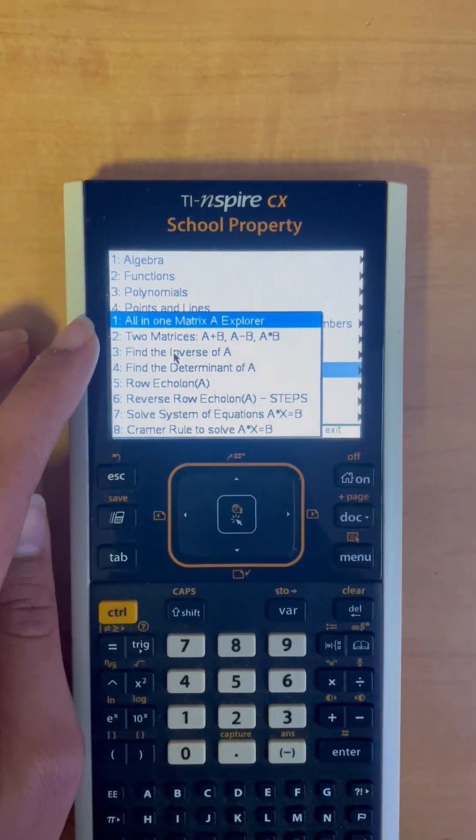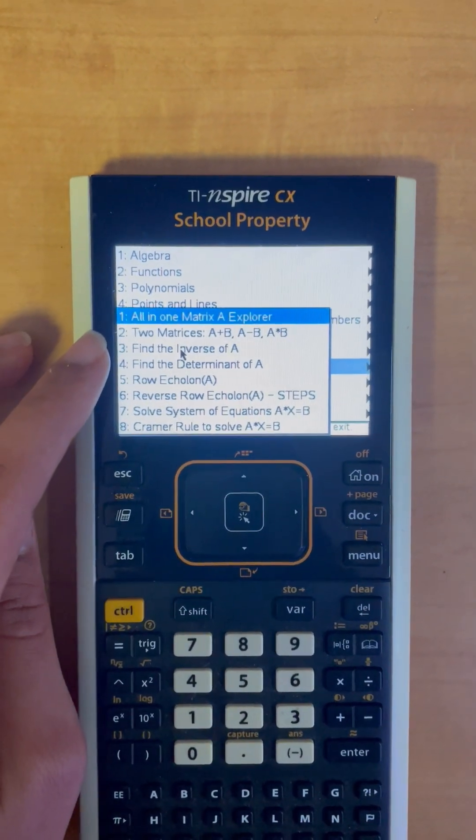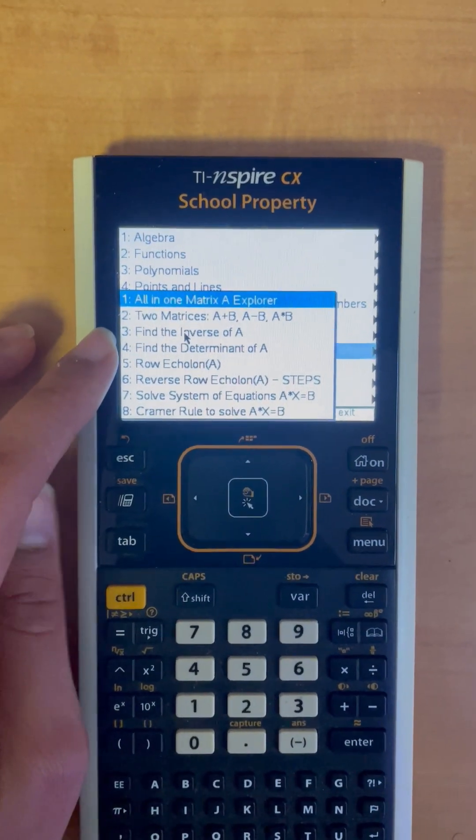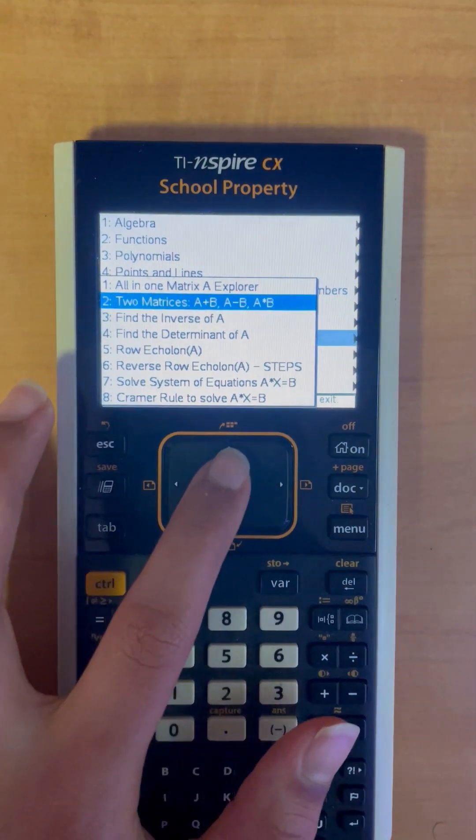Here we have all-in-one matrix explorer, two matrices, A plus B, A minus B, A times B, find the inverse of A, but today we're going to go to two matrices.